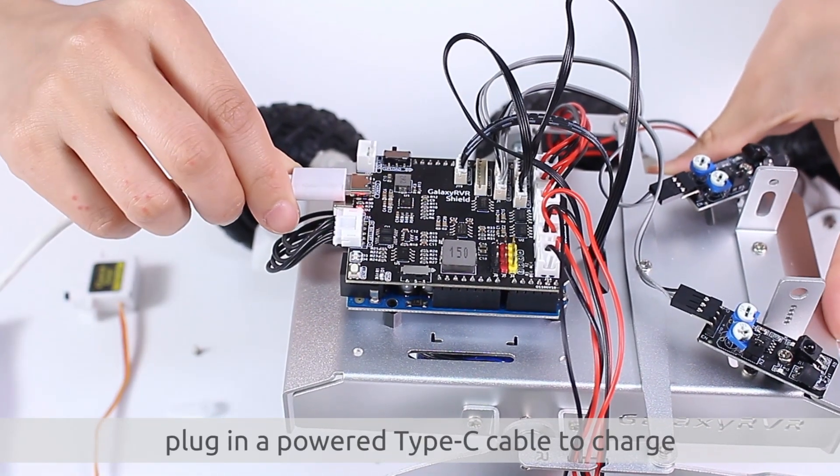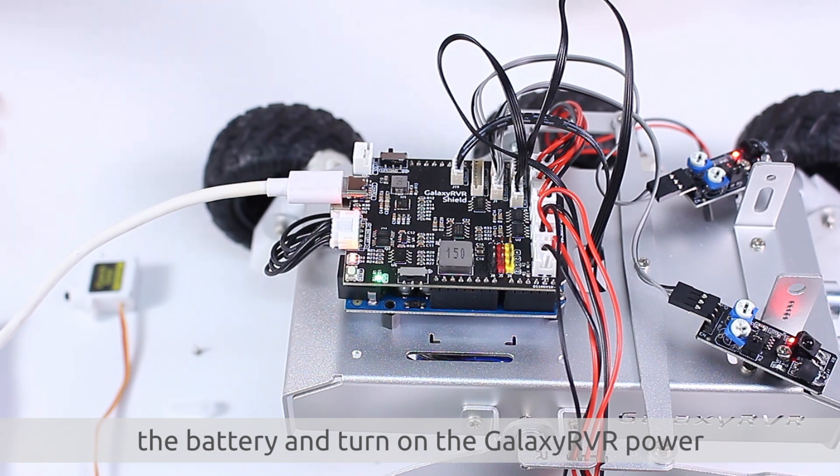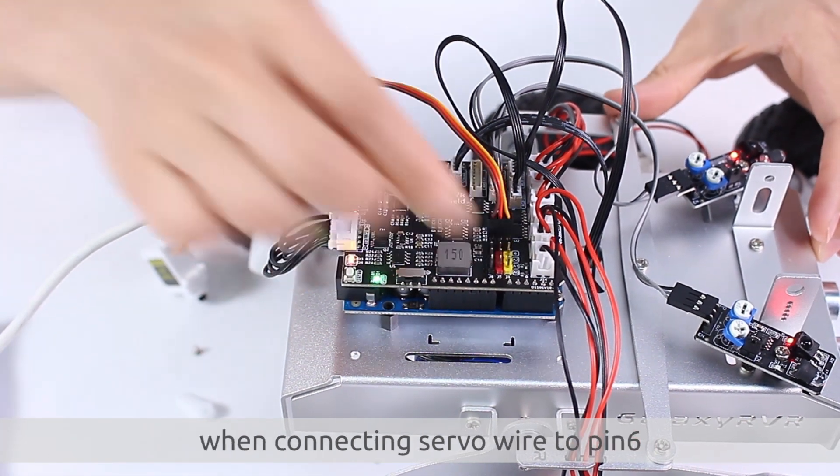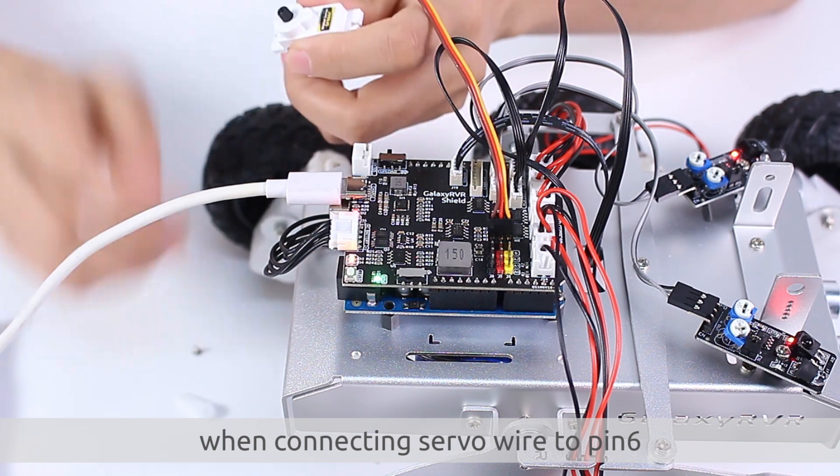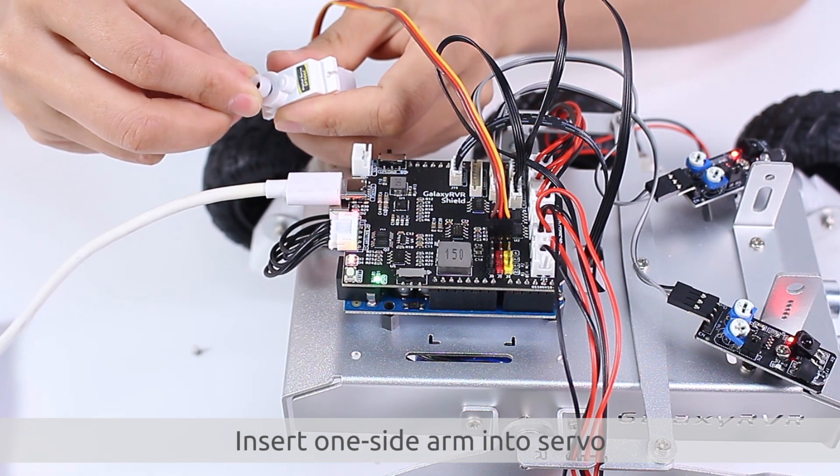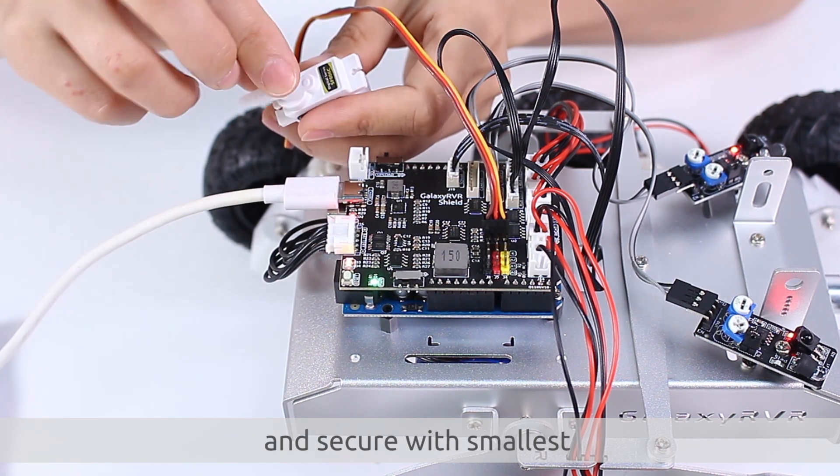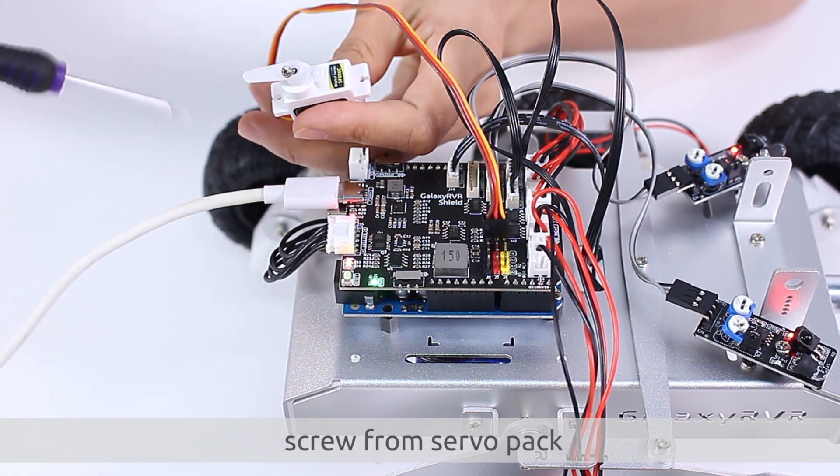Next, plug in a powered Type-C cable to charge the battery and turn on the Galaxy server power. Normal to hear servo rotation when connecting servo wire to pin 6. Insert one side arm into servo noting arm orientation and secure with smallest screw from servo pack.